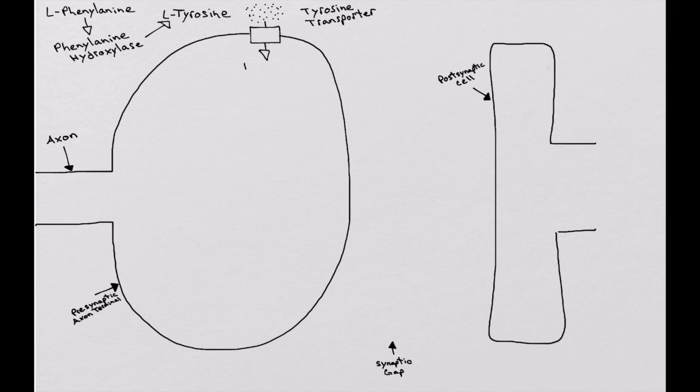Once inside the presynaptic terminal, the tyrosine is then broken down by tyrosine hydroxylase. Tyrosine hydroxylase converts the tyrosine into L-DOPA.